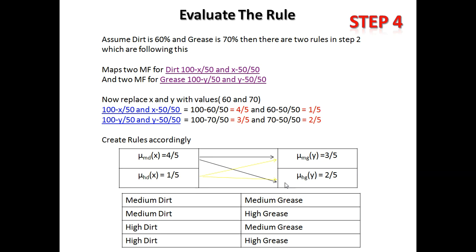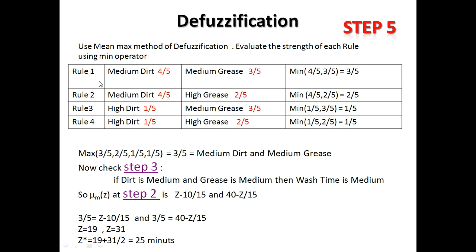We place these four rules into the rule base as rule 1, rule 2, rule 3, and rule 4 with their respective values — for example, medium dirt is 4/5 and medium grease is 3/5. Since the output is fuzzy, we need a crisp output. We apply the min-max method of defuzzification: computing the minimum of each rule's pair — giving 3/5, 2/5, 1/5, and 1/5 — then taking the maximum, which is 3/5.